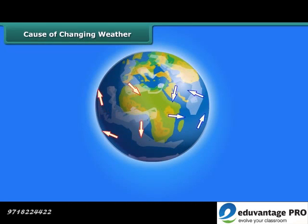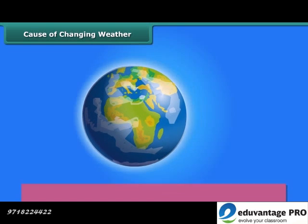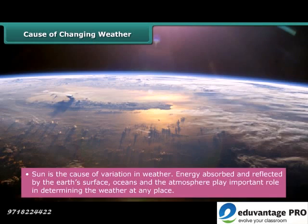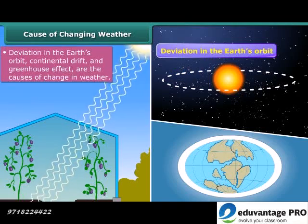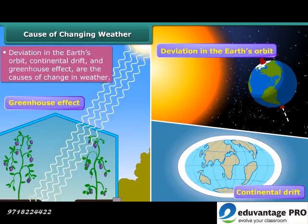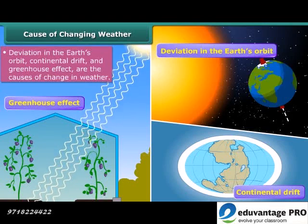The weather is such a complex phenomenon that it can vary over very short periods of time. The sun causes all changes in the weather. Energy absorbed and reflected by the earth's surface, oceans and the atmosphere play important roles in determining the weather at any place. Also, deviation in the earth's orbit, continental drift and greenhouse effect are additional causes of the changes in weather.